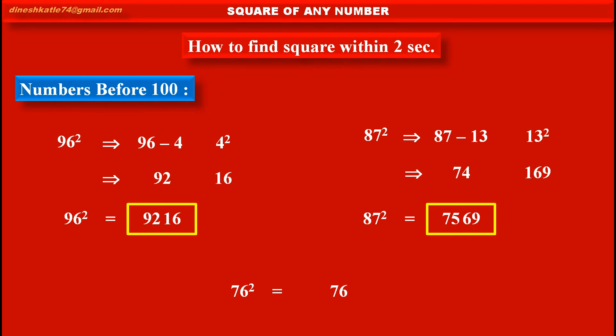Now, the next part is 76 minus difference, that is 24. It is 52 and carried 5. So, it is total 57. Thus, 5776, the number 5776 is the square of 76.